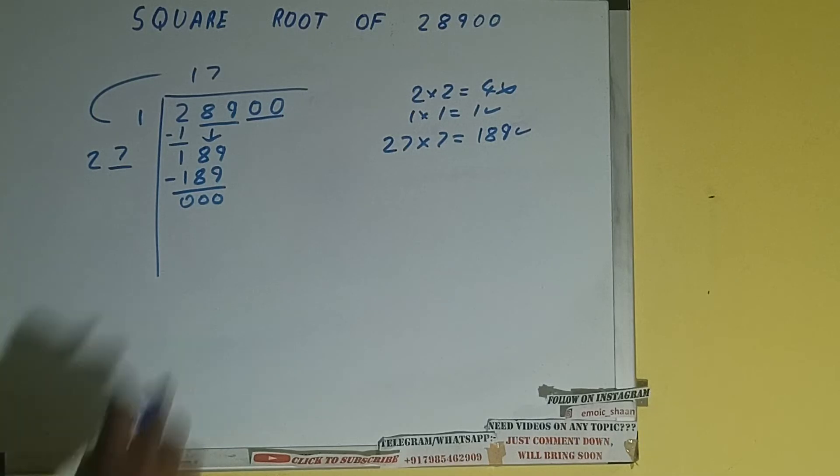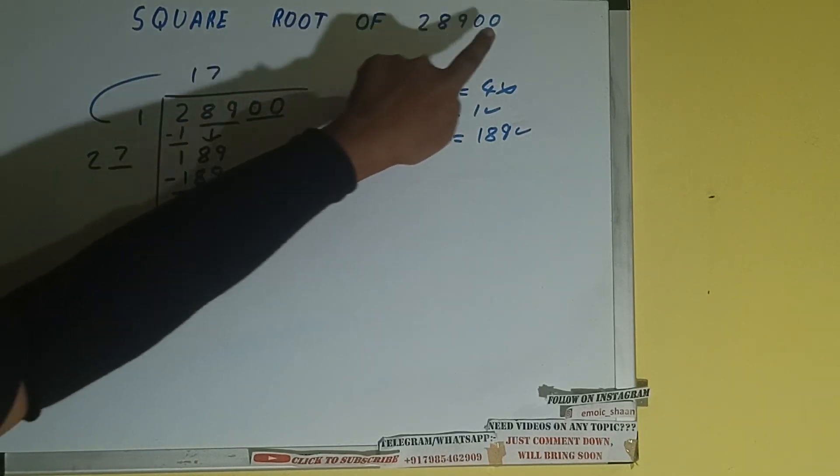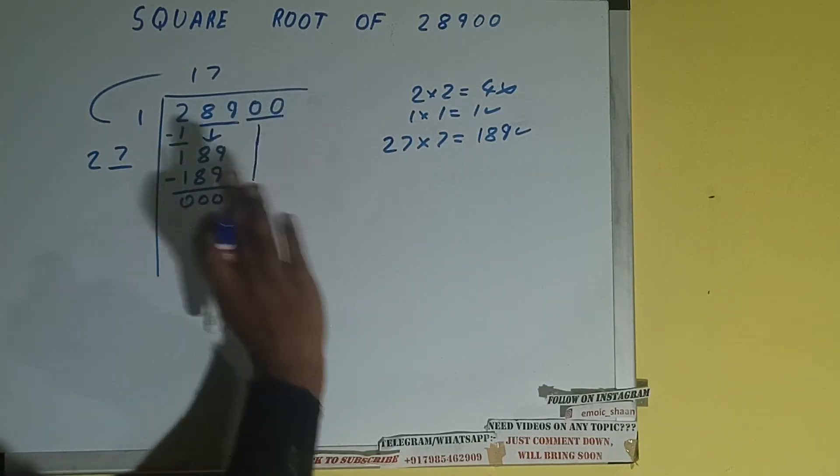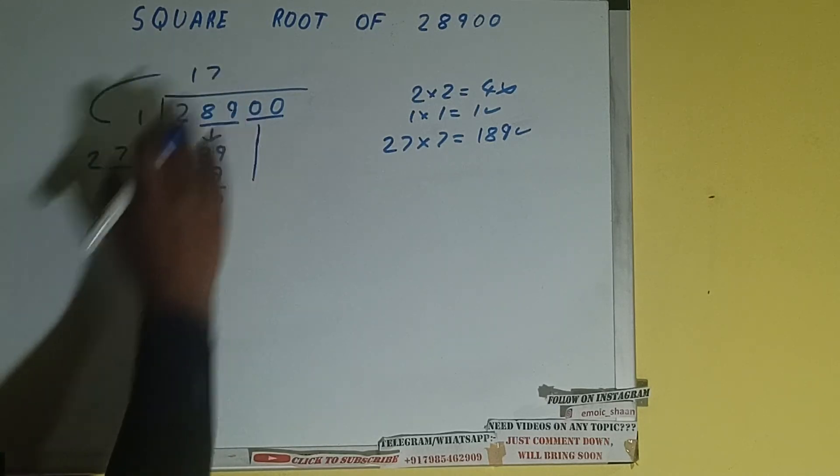Now here we have got 0, but if you see we have a pair of 0 that was part of the number which is yet to be divided. So because this pair of 0 was part of the number, we have to divide it once. So we'll bring it down. But before that, we did 27 into 7, right? So add both: 27 plus 7 will be 34 and keep a digit extra.